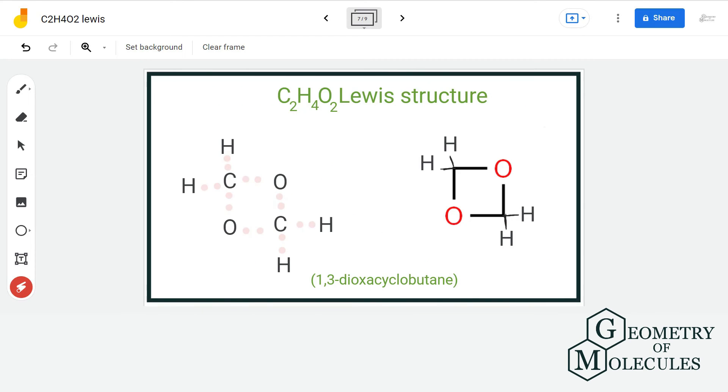The next structure is of the class cyclocompounds in organic chemistry. As the name suggests, there will be a ring formation and we will arrange carbon and oxygen atoms in such a way that it will form a loop-like structure. This is the Lewis structure of 1,3 dioxycyclobutane and this is its structure.